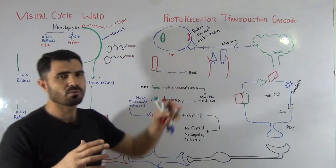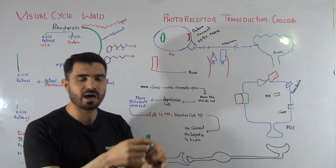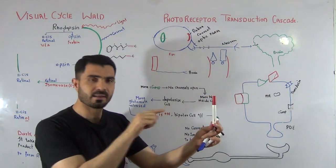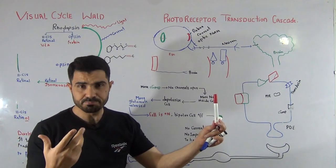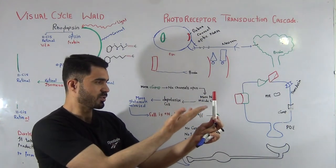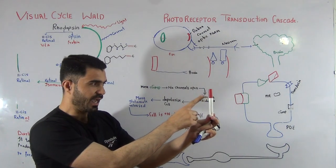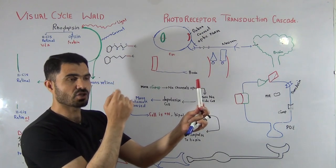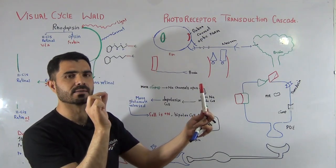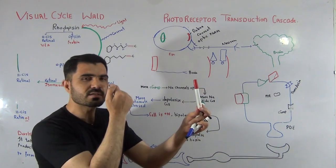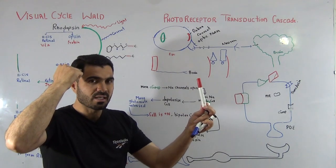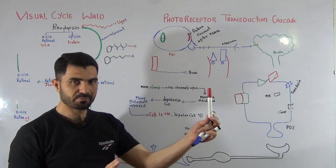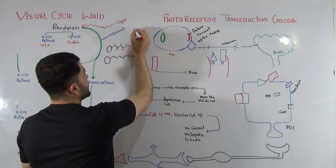Before starting the visual cycle, let me explain how we perceive and see objects with the help of the eye. Suppose there is a pen and I want to see it. There must be light — the light falls on the object, is reflected from it, and enters our eye. Inside our eye, the light is converted into a small current called a nerve impulse, which then travels to our brain where we perceive the object.